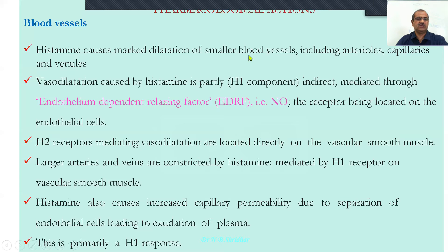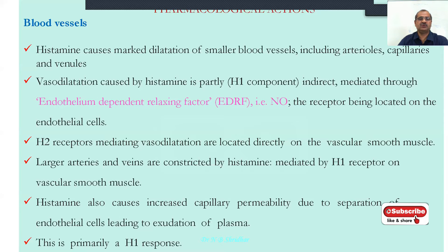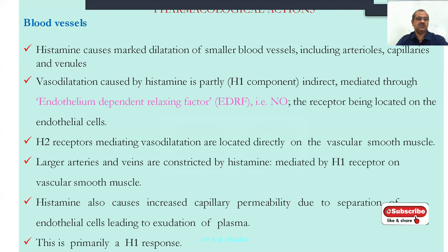Histamine causes marked dilatation of smaller blood vessels. Whenever there is an allergy, blood vessels and capillaries are dilated. Vasodilatation is caused by H1 histamine receptor stimulation mediated through endothelial-derived relaxing factor (EDRF), which is nitric oxide. H2 receptors are located on endothelial cells and vascular smooth muscles causing dilatation, whereas larger arteries are slightly constricted by histamine mediated through H2 receptors.